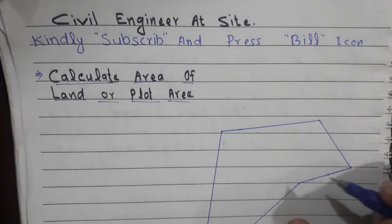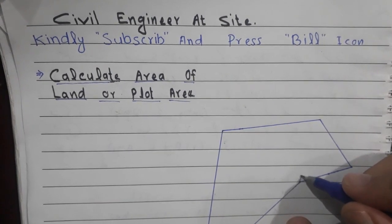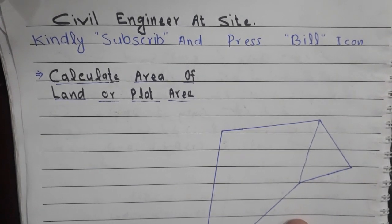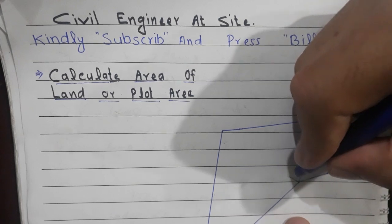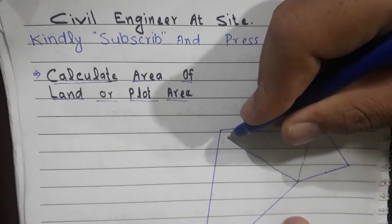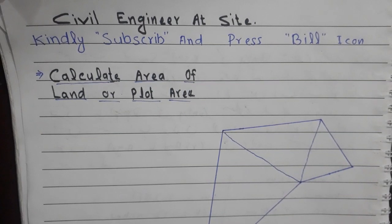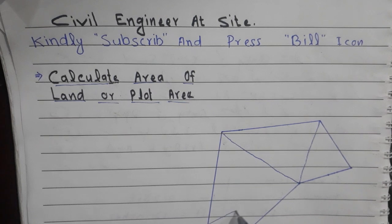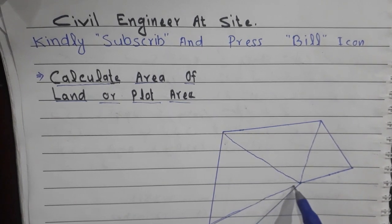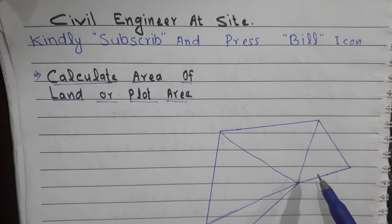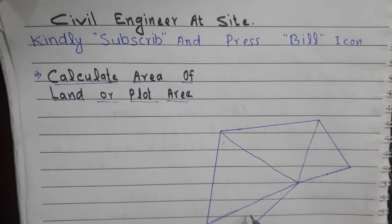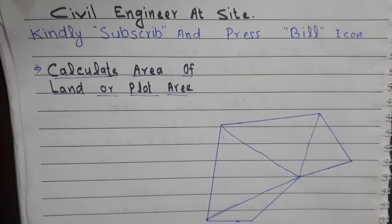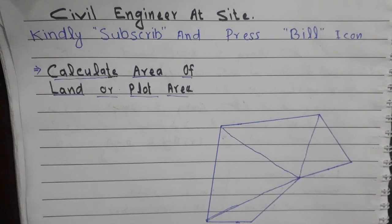Let's start with this example. First of all, we make triangles: this is triangle number one, this is triangle number two, and this is triangle number three. So we have divided the land area into four triangles: triangle one, two, three, and four. Now we will assume some dimensions for these triangles.